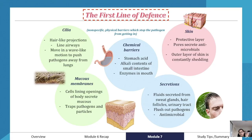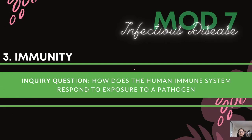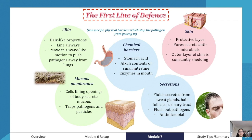Let's look at our practice question: how does the human immune system respond to exposure to a pathogen? There are mechanisms in our body that are in place to respond to pathogens. The first line of defense is part of the innate immunity.